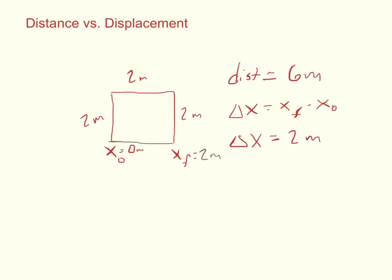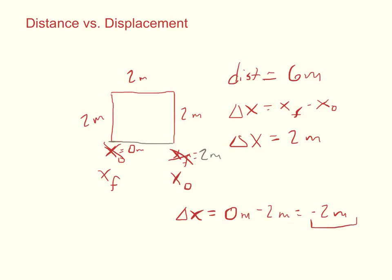Now let's point out one more important thing. If instead we reverse direction — so what was x final is now x naught and what was x naught is now x final — then delta x equals x final, which is at zero meters, minus the initial position of two meters. Following the math, that gives negative two meters. So we can have a negative displacement, and that's perfectly okay. Negative or positive displacement is just telling you which direction you are from zero — to the left or right, depending on how you set your frame of reference.